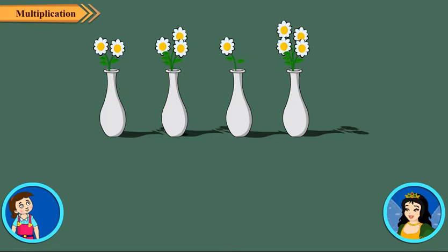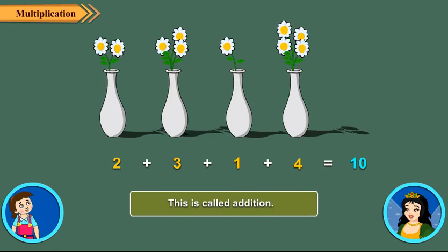Here we have two flowers in the first vase, three in the second, one in third, and four in the fourth vase. So to find the total number of flowers, we add them all. This is called addition.